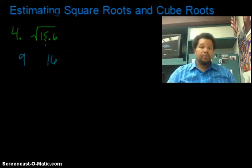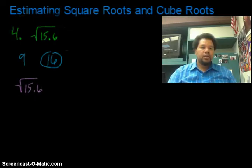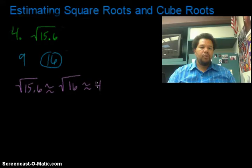So we got to decide which one is it closest to. It looks like it's closer to 16. 15.6 is just 0.4 away from 16, and 15.6 is about 5 units away from 9. So it's closer to 16. So that's going to tell me that the square root of 15.6 is approximately the same as the square root of 16, which is 4. So there we go.